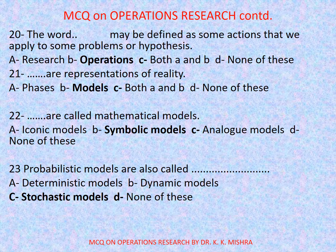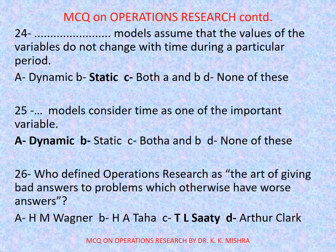Question number 23: Probabilistic models are also called dash — options are: A. Deterministic models, B. Dynamic models, C. Stochastic models, D. None of these. Correct option is C: Stochastic models. Question number 24: Dash models assume that the values of the variables do not change with time during a particular period — options are: A. Dynamic, B. Static, C. Both A and B, D. None of these. Correct option is B: Static.